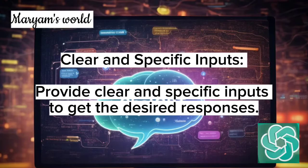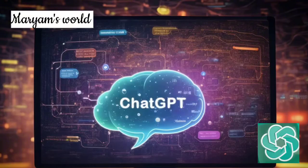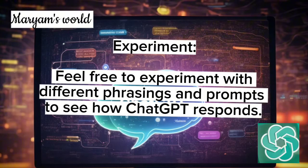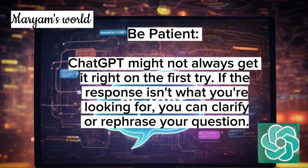Clear and specific inputs — provide clear and specific inputs to get the desired responses. Experiment — feel free to experiment with different phrasings and prompts to see how ChatGPT responds. Be patient — ChatGPT might not always get it right on the first try. If the response isn't what you're looking for, you can clarify or rephrase your question.